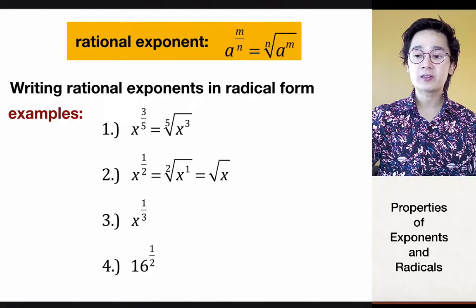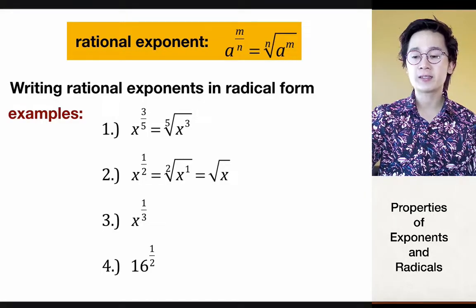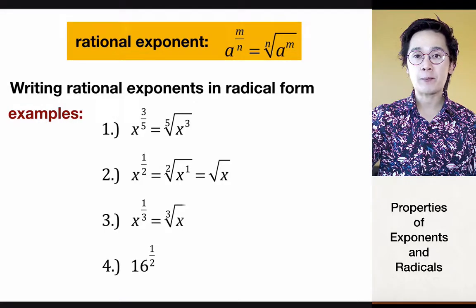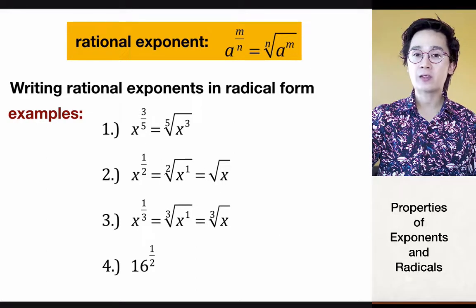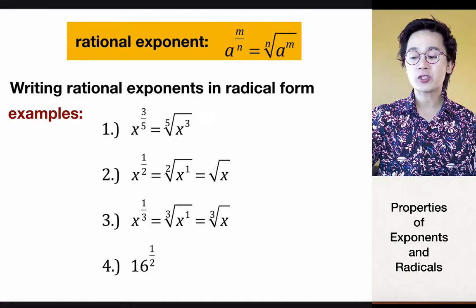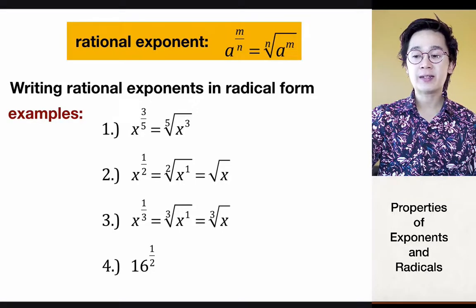It's wise to know that x raised to 1 half is the shorthand version of the square root of x. If I have x raised to 1 over 3, the denominator is 3, so I get the third root of x. If I have x raised to 1 over 5, it's the fifth root of x; and x raised to 1 over 10 gives the tenth root of x. These are basic rational exponents you'll encounter in algebra.